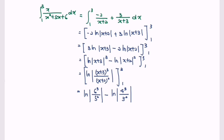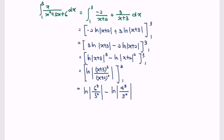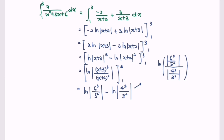By using the properties of logarithms, simplify the situation and we will have ln of the bracket: (6³ over 5²) divided by (4³ over 3²). Rewrite the situation: ln|6³ over 5² multiplied by 3² over 4³|.